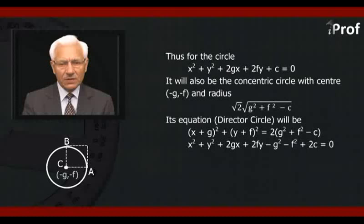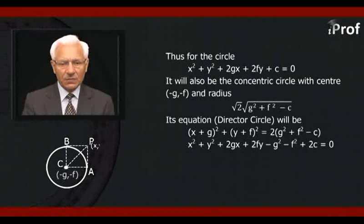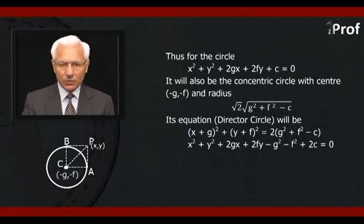Hence, the equation of the directed circle is (x + g)² + (y + f)² = 2(g² + f² - c), which simplifies to x² + y² + 2gx + 2fy - g² - f² + 2c = 0.